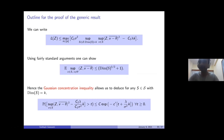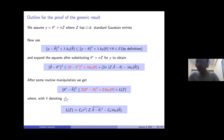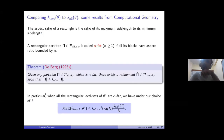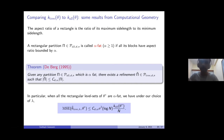Regarding high dimensions: the dimension-dependent constant c_d(alpha) from the alpha-fat partition refinement result could potentially depend exponentially on d, which is why I said 'low or moderate dimensions.' Otherwise, the computational terms are at most linearly dependent on the dimension. That's the only part which is badly dimension-dependent.